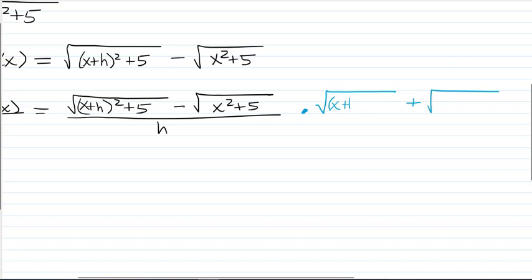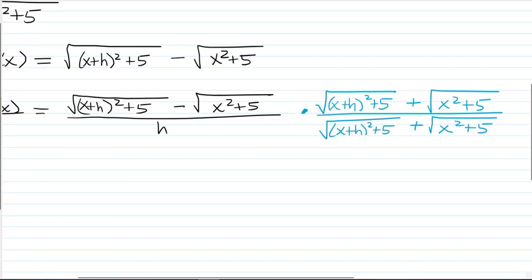So we're going to still have the same two radicals but with them being added. And of course, we can't just multiply by them because we want to. So we have to multiply in the top and the bottom. So we're just multiplying by 1, really. Okay, now why do we do this?